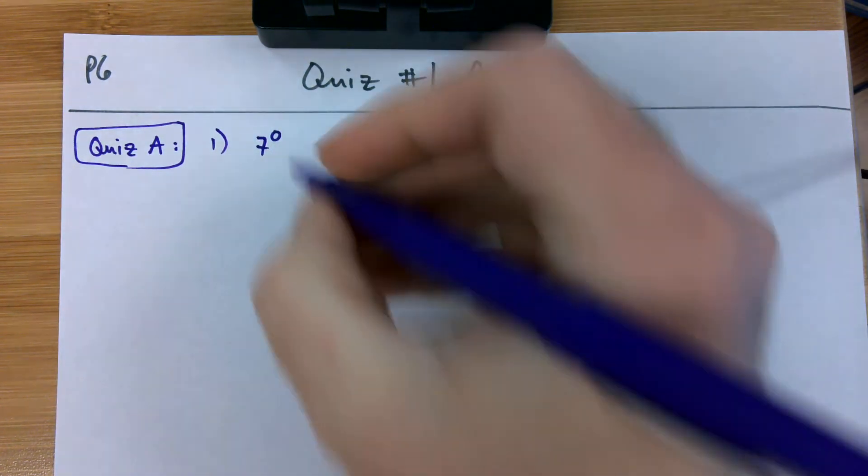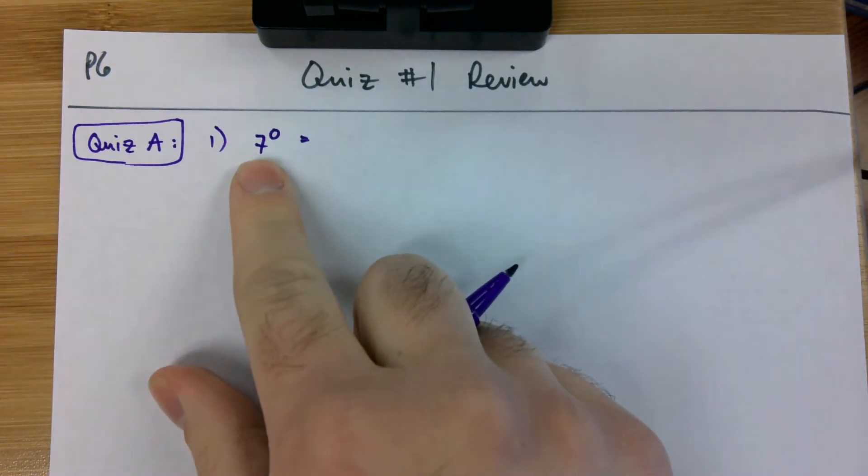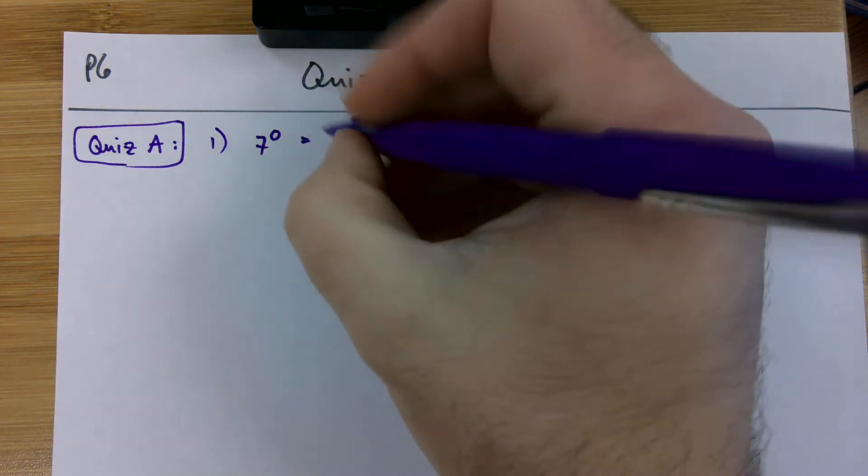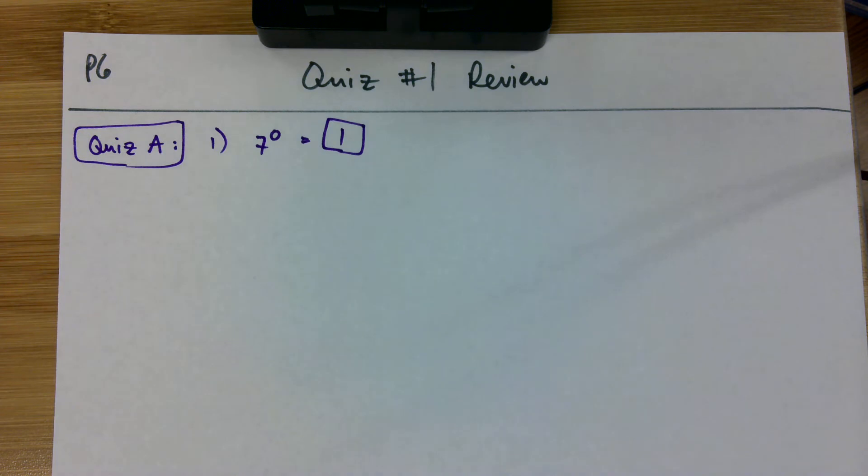Quiz A, number one, we got seven to the power of zero. As we know, anything to the power of zero is equal to one.